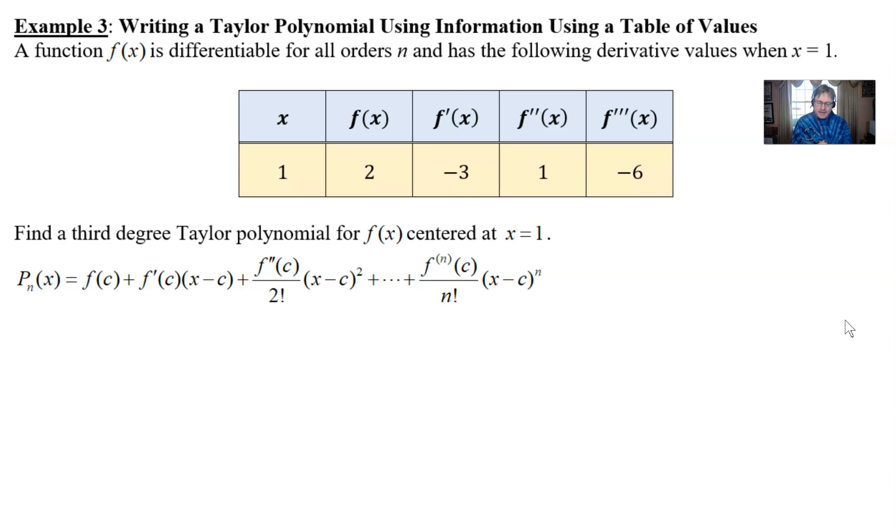Find a third degree Taylor polynomial for f(x) centered at, and thank goodness it's at x equal one because it's going to have to be because that's what the values in our table reflect.